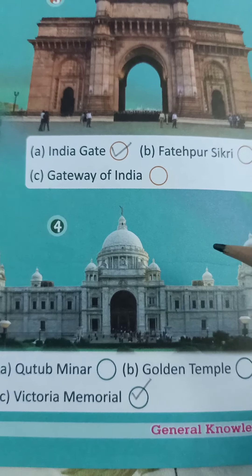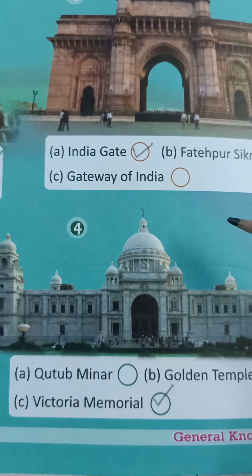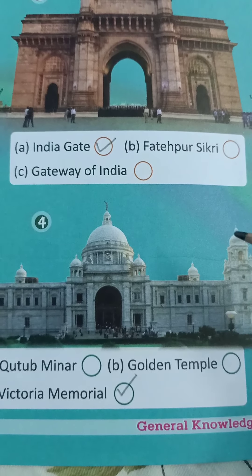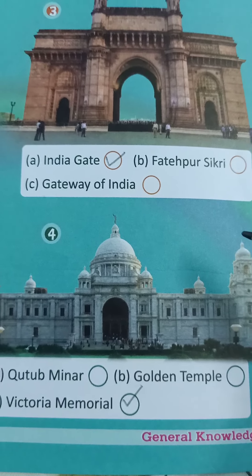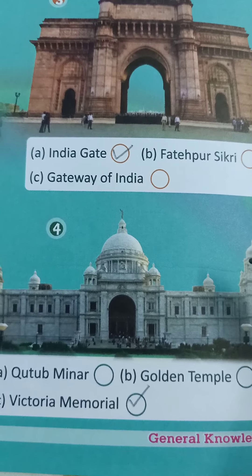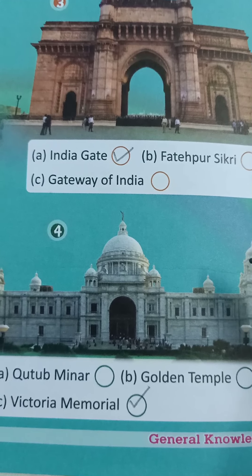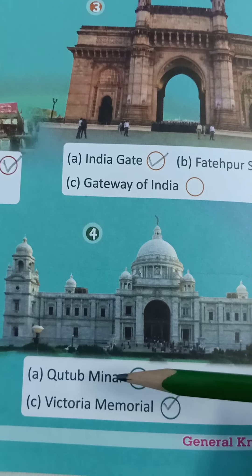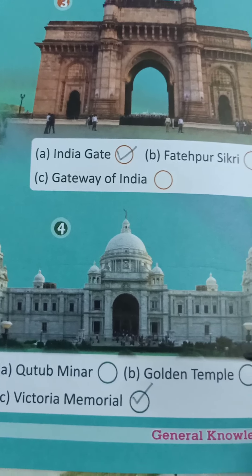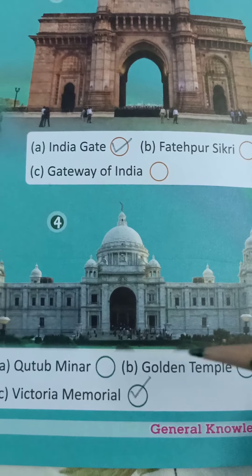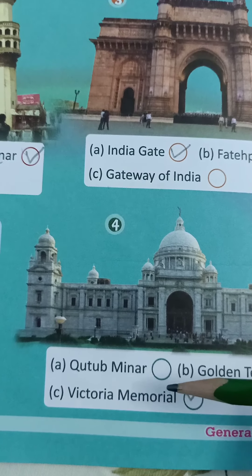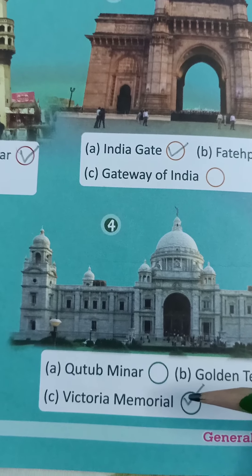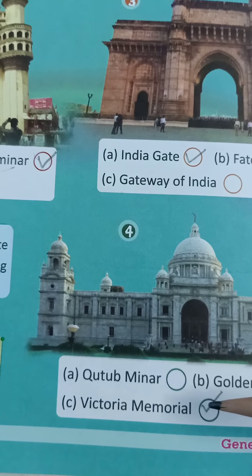This picture is Victoria Memorial. Let's see the options: Qutub Minar, Golden Temple, Victoria Memorial. So put a right tick over here, children.